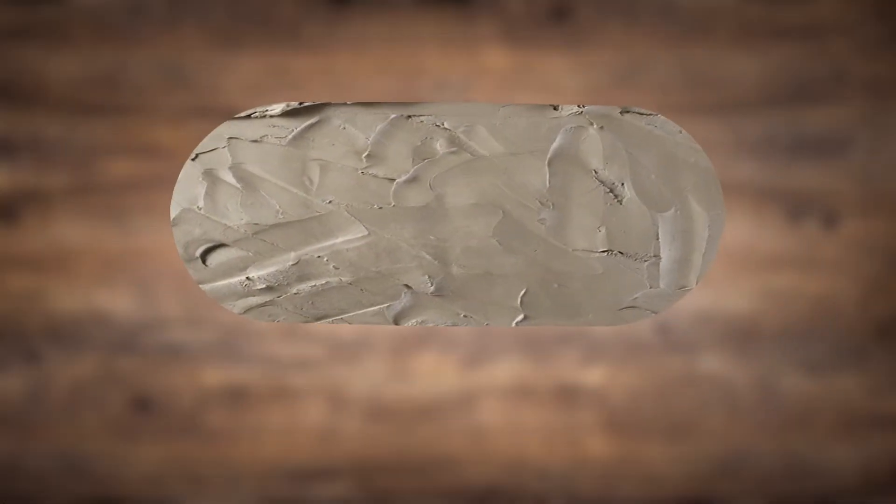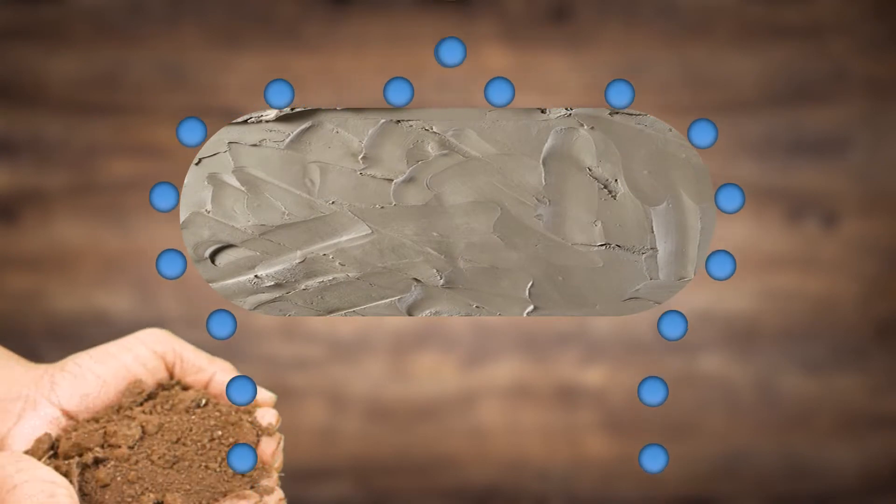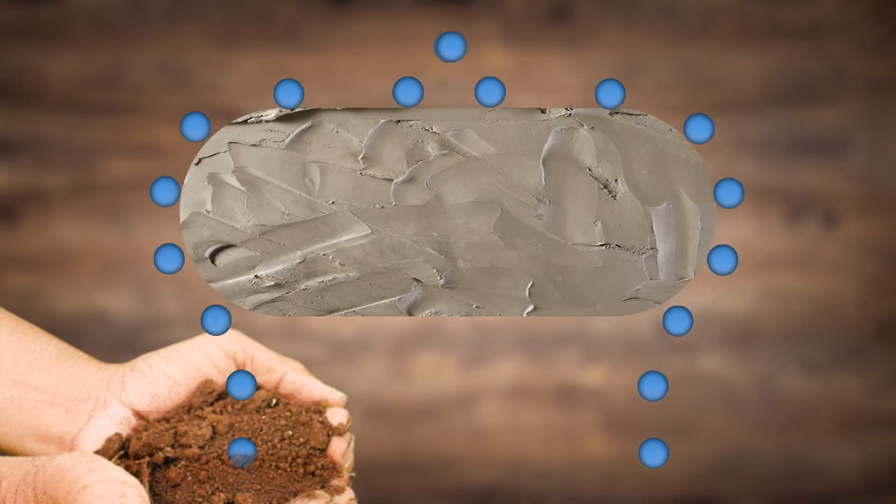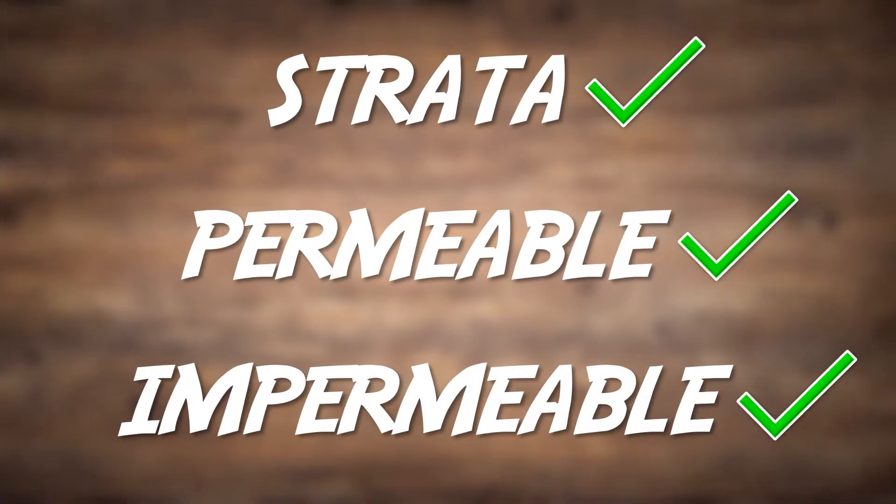This impermeable layer of minerals doesn't allow water to pass through it. So water can effectively create two opposites, one layer that absorbs water easily, and another that confines water and offers no absorption. And that's permeable and impermeable.